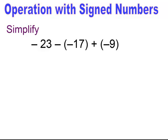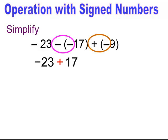Pause and try. First, get rid of the double signs, ending up with negative twenty-three plus seventeen minus nine. Working from left to right, negative twenty-three plus seventeen is negative six, then minus nine — same sign — add and keep the sign. You should have gotten negative fifteen.